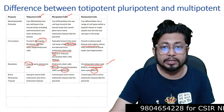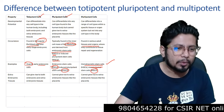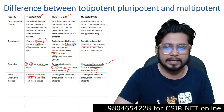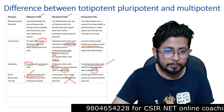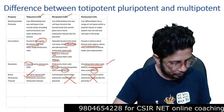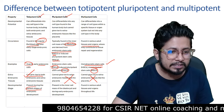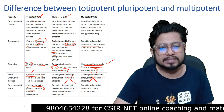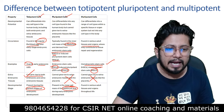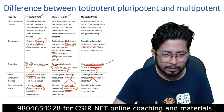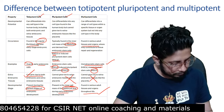Regarding extra-embryonic tissue: can these three kinds of cells produce it? Totipotent cells can give rise to both embryonic as well as extra-embryonic tissue. But both pluripotent and multipotent cannot produce extra-embryonic tissue. In terms of developmental stage: totipotent stem cells are found at the earliest stages of embryonic development; pluripotent cells at the early stage, generally as part of the inner cell mass of the blastocyst; and multipotent cells are found in various adult tissues and organs throughout life.